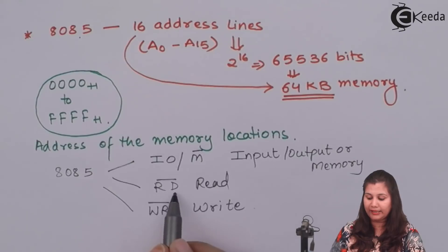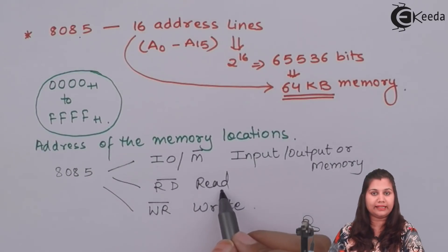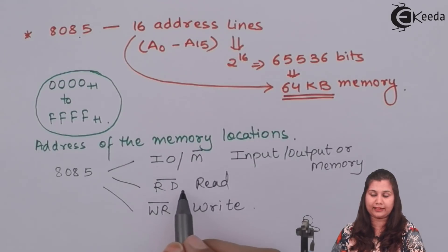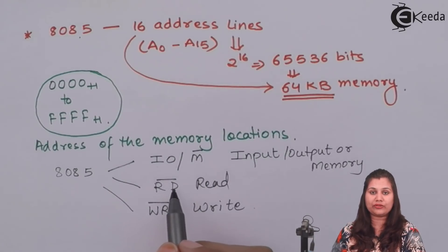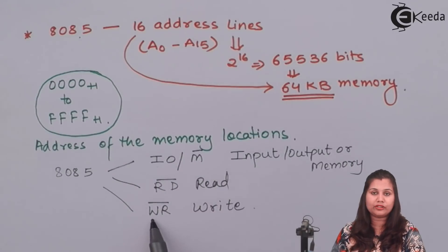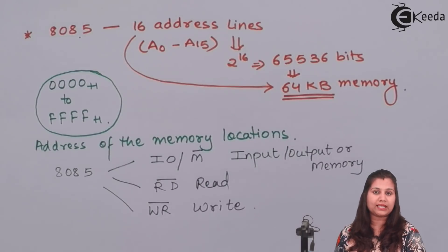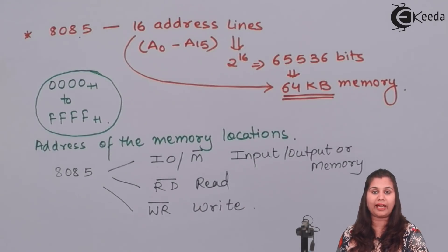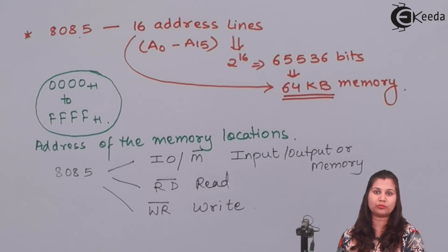The second signal is RD bar, which is an active low signal — active when its value is 0. This is the read signal; when active, it means the 8085 microprocessor is performing the read operation, i.e., reading data from the memory. The third signal is WR bar, also an active low signal. When this signal is low and active, it means the 8085 is performing the write operation — writing a data byte into the memory.